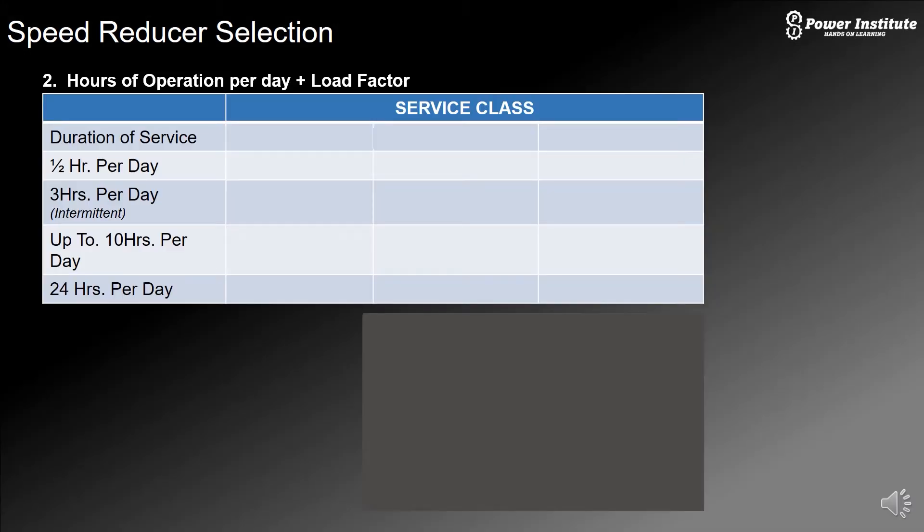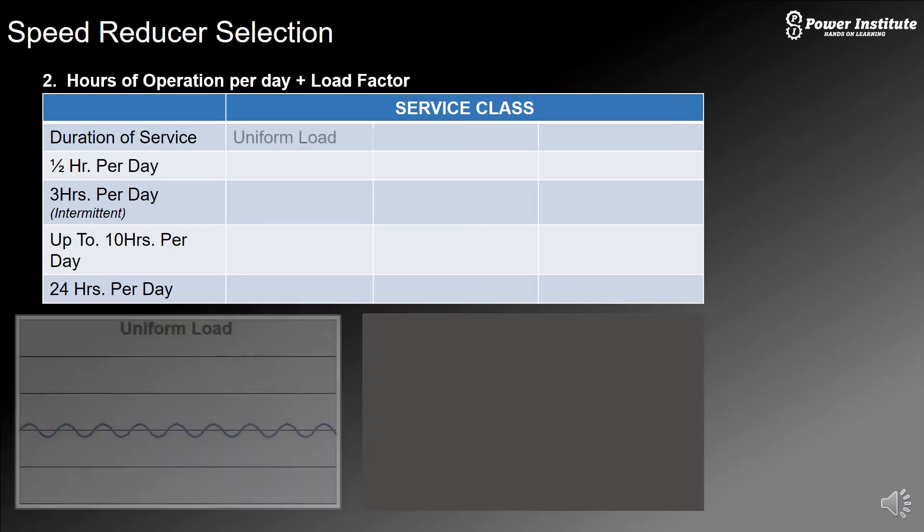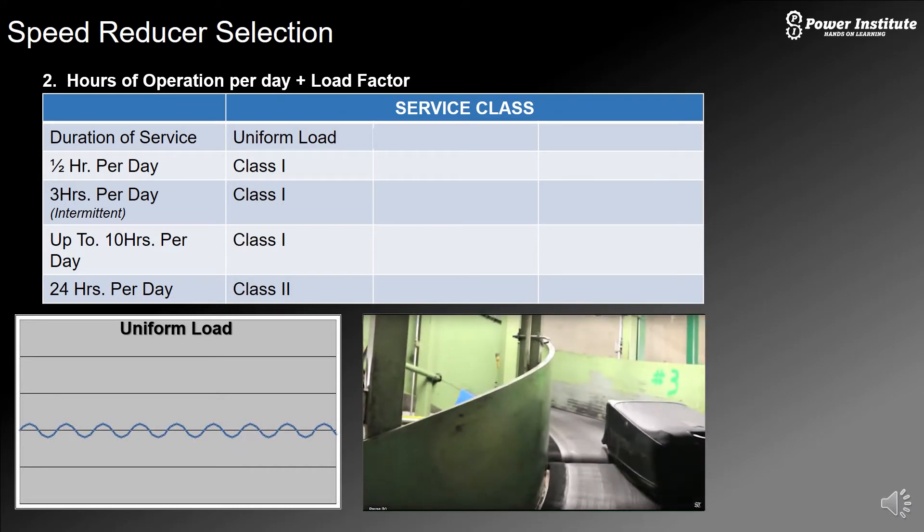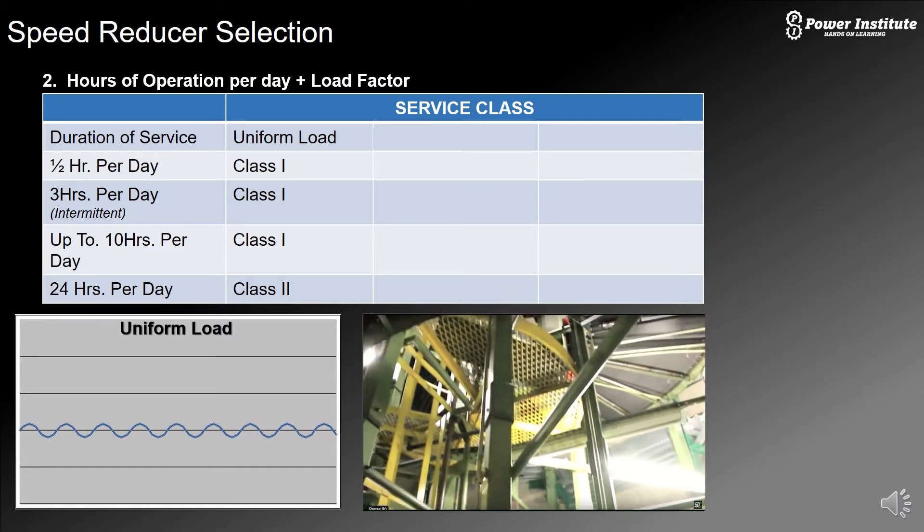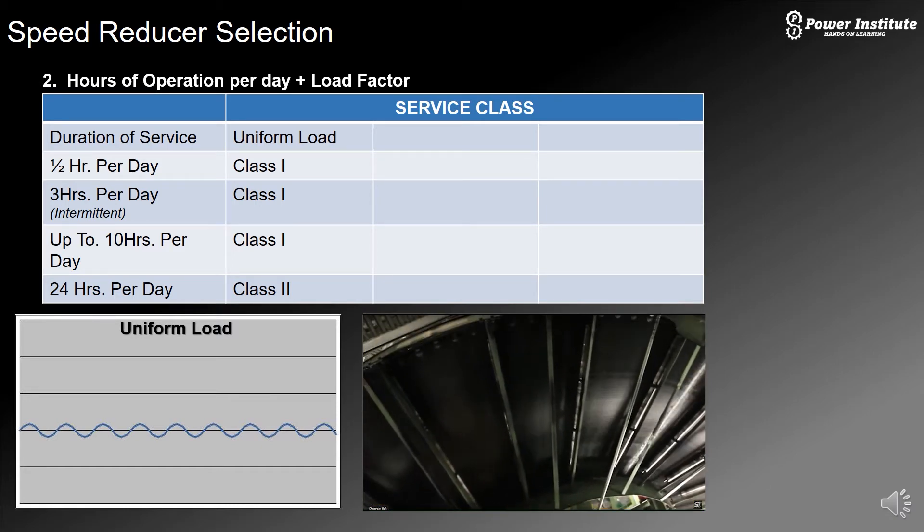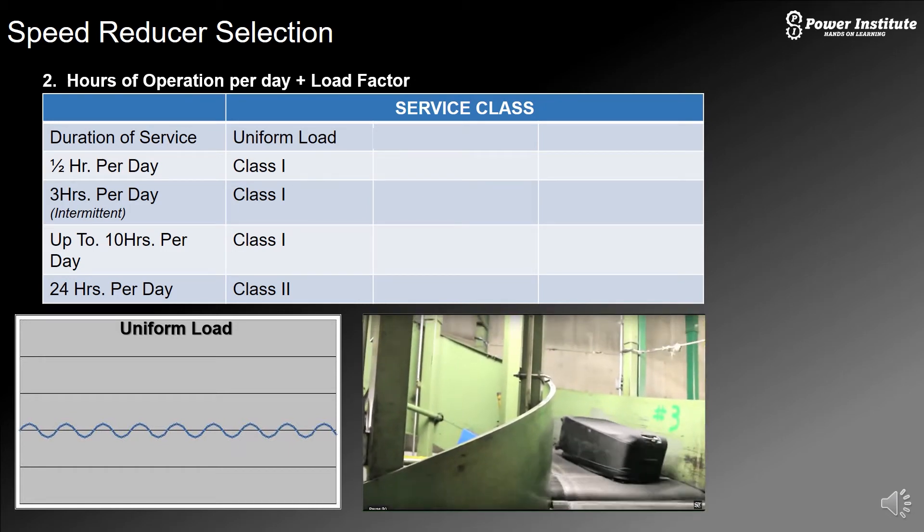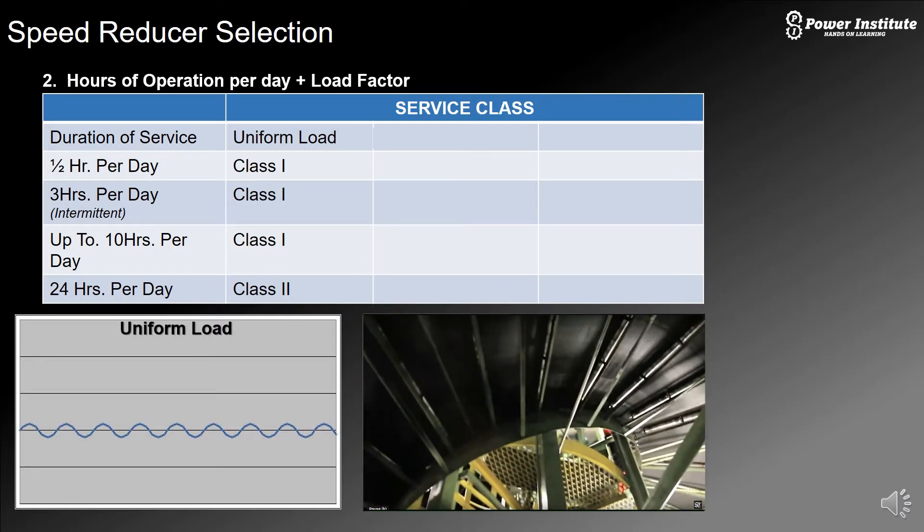Some things that we look at to select a gearbox: we start off with how long is it running during the day and what type of load it's running at. We'll start with uniform load. Uniform load is very simple. An example here is a baggage conveyor. The load is very standard, doesn't bounce a lot, a little bit of bounce but not too much. Very uniform, not a lot of shock load, not a lot of change in speed. It's a constant run.